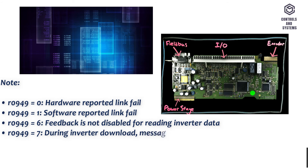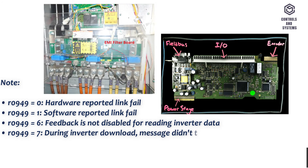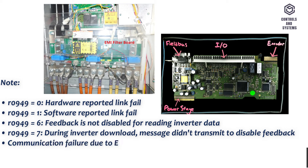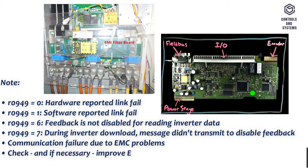R0949 equals 7: during inverter download, message didn't transmit to the data to disable feedback. Communication failure due to EMC problems. Check and, if necessary, improve EMC. Use EMC filter.